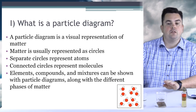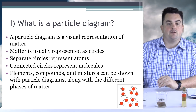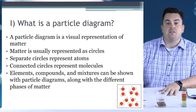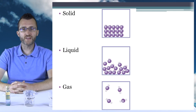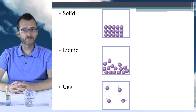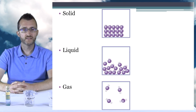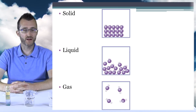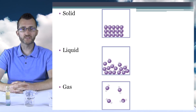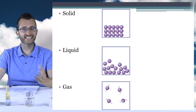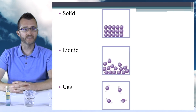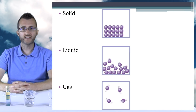Elements, compounds, and mixtures can be shown with particle diagrams, along with different phases of matter. Let's take a look at the different phases of matter as represented in particle diagrams. In our first drawing we have a solid represented. Notice how the particles are organized and tightly packed together.